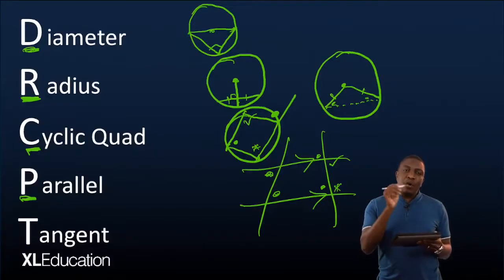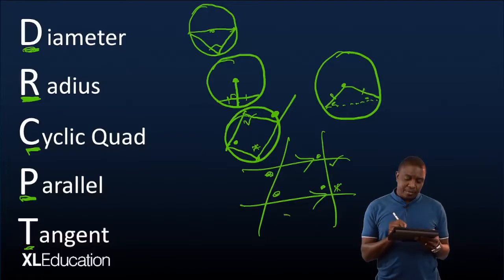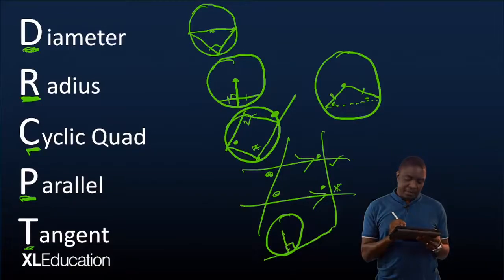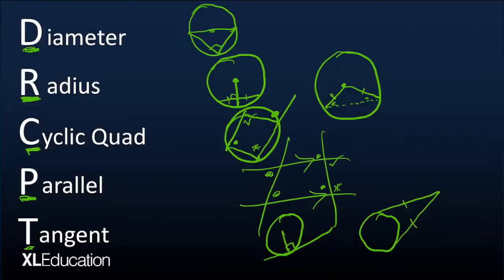When you are done with all the parallel lines, look for any tangents in your diagram. When you are looking at tangents, check for any theorem connected to the tangent — for example, the tan-chord theorem, or the setup of two tangents from a common point outside the circle. When you are done with this, think of any other theorem you have come across.